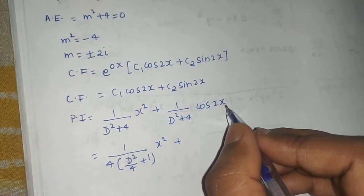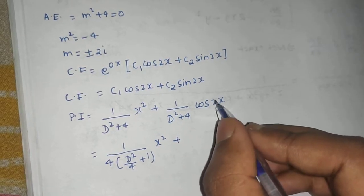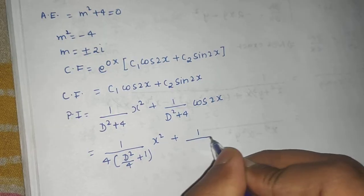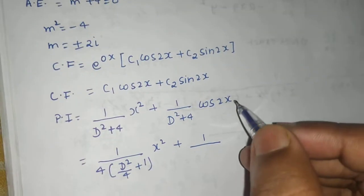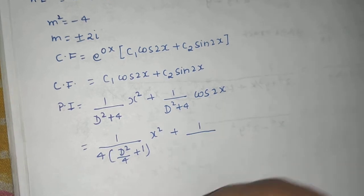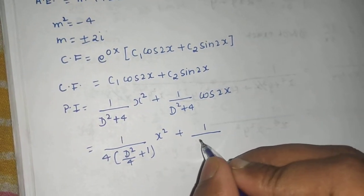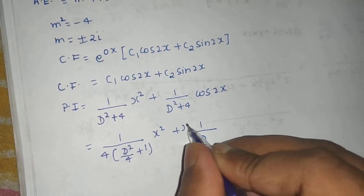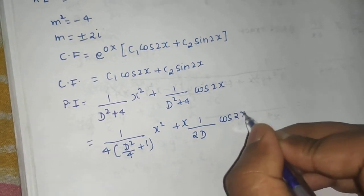What is the rule for cos(ax)? Replace D² by -a². So when you will do so you will get -4 + 4, 0 in denominator. So better differentiate the denominator. So 2D and multiply by x. Now this will operate on cos(2x).